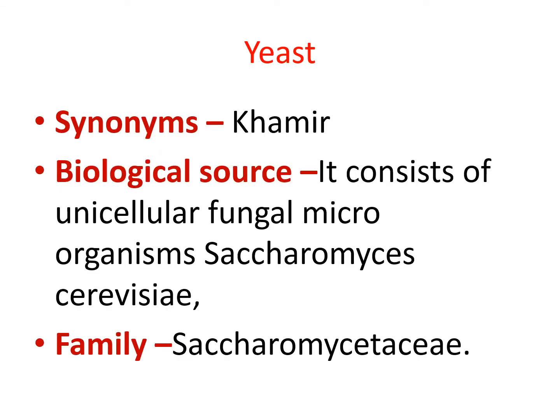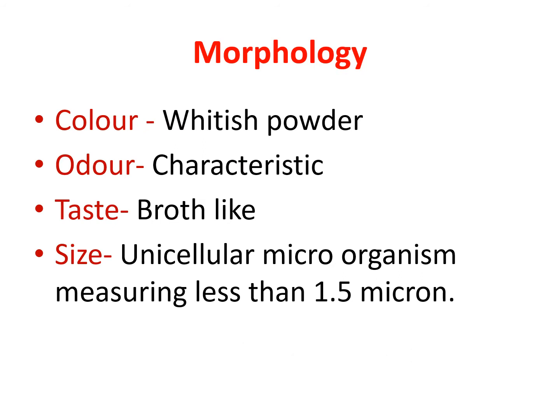Our second drug is yeast. Yeast is also known as khamir. Biologically, yeast consists of the unicellular fungal microorganism named Saccharomyces cerevisiae, which belongs to the family Saccharomycetaceae. Morphologically, yeast has a whitish color, characteristic odor, broth-like taste, and it is a unicellular microorganism which measures less than 1.5 microns.